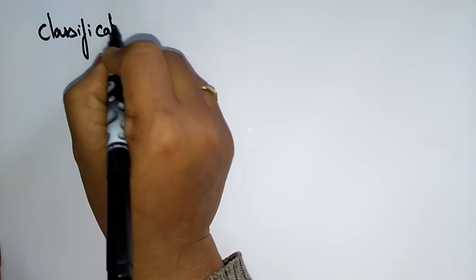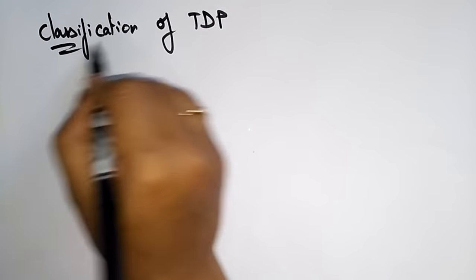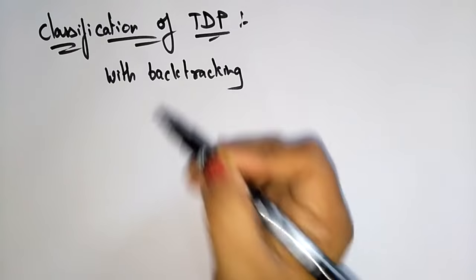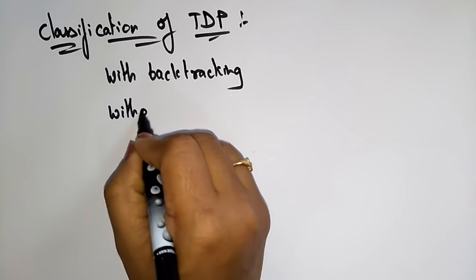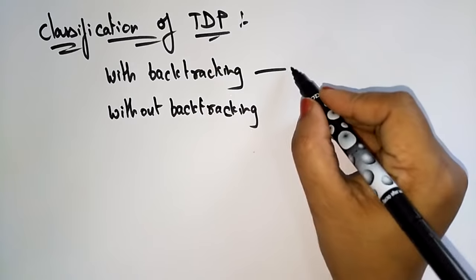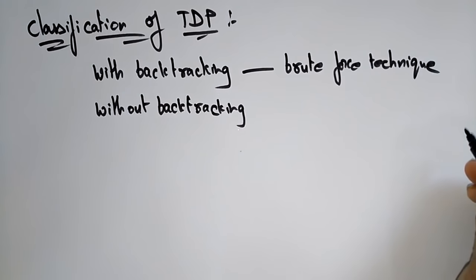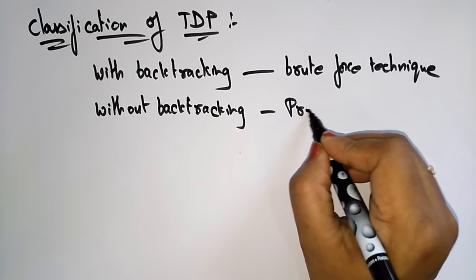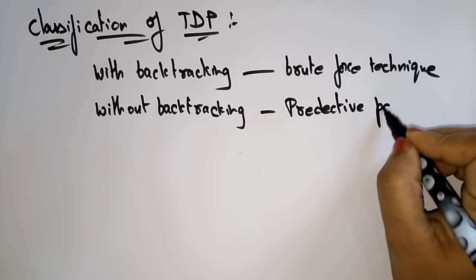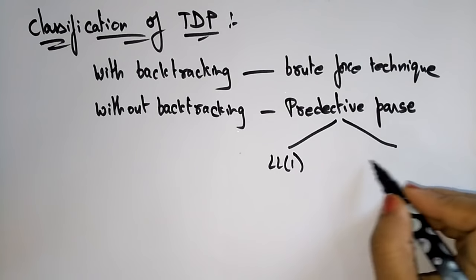The different classifications of top-down parser are: with backtracking and without backtracking. With backtracking is an example of a brute force technique. Without backtracking is the predictive parser — the predictive parser constructs a parse tree without using the backtracking concept. The predictive parser uses LL(1) grammar and is also known as a recursive descent parser.